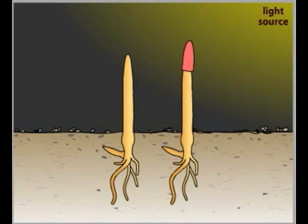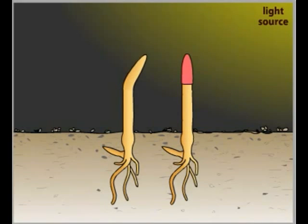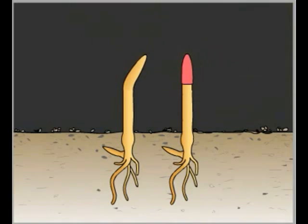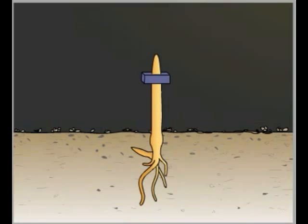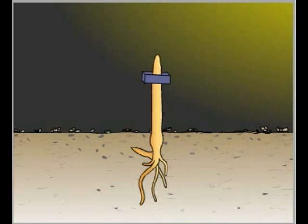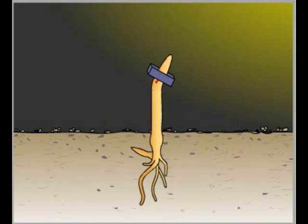When Darwin placed a blindfold on a growing coleoptal, he observed that the plant no longer grew toward the light. This suggested that something in the tip of the coleoptal was responsible for this directed growth. Other experiments demonstrated that even when the tip is removed and a layer of agar placed between the tip and the base, the plant still grows toward the light. This suggests that the light-sensitive signal can travel through a permeable barrier, directing the plant's growth.